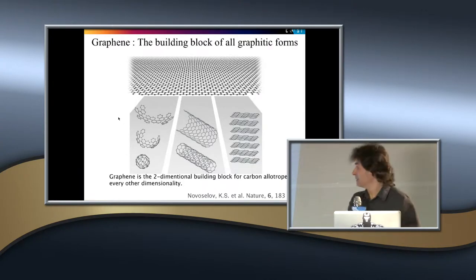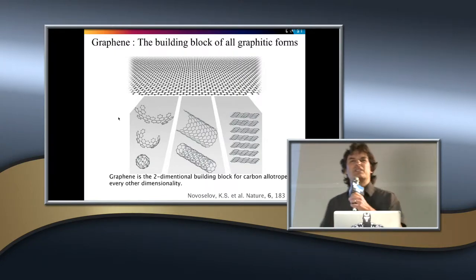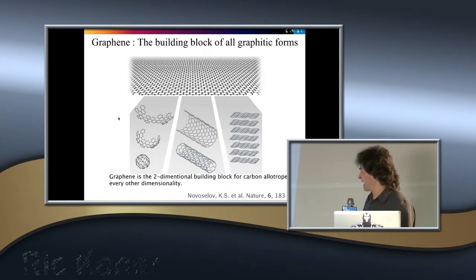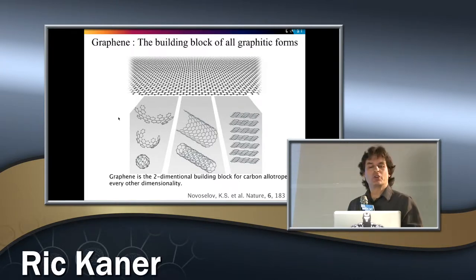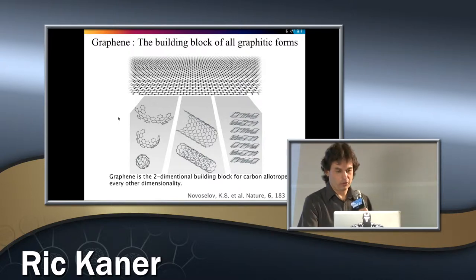So here's graphene, the single layer of carbon. It just looks like chicken wire, if you like. And you can stack it up and you can make graphite. You can roll it up and make carbon nanotubes, or you can put in a few things and make what are called buckyballs.